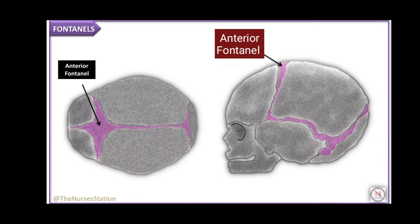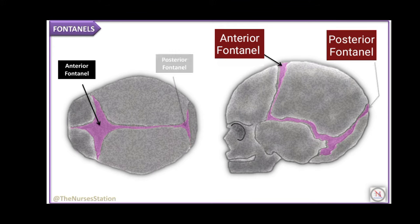The shape of the anterior fontanelle is like a diamond. Its anterior-posterior and transverse diameters measure approximately three centimeters each. The floor of the anterior fontanelle is formed by a membrane and it becomes ossified 18 months after birth. It becomes pathological if it fails to ossify even after 24 months.